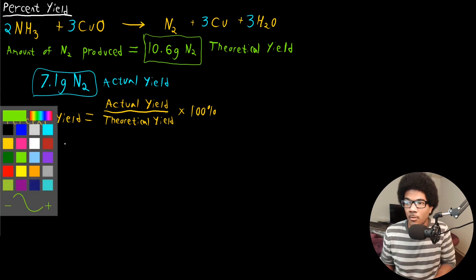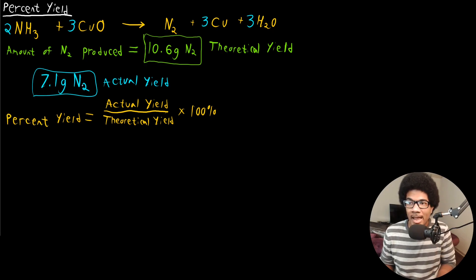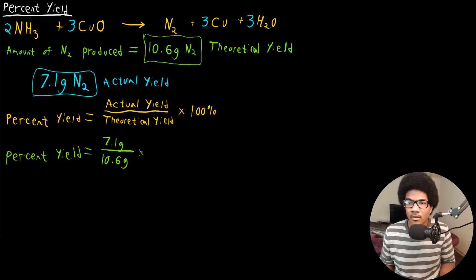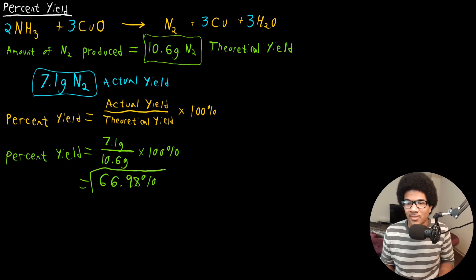For our N2 reaction, the actual yield was 7.1 grams and the maximum amount that could be produced was 10.6 grams. So the percent yield is 7.1 grams over 10.6 grams, multiplied by 100%, which gives 66.98% — close to 67% yield.